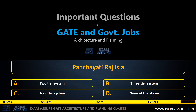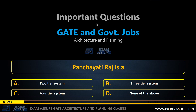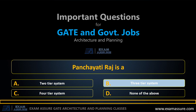Next question. Panchayati Raj is a — Option A: 2-tier system. Option B: 3-tier system. Option C: 4-tier system. Option D: None of the above. The correct answer is Option B: 3-tier system.